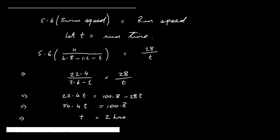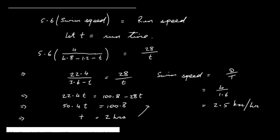The question asks for her average swimming speed. Speed equals distance over time: distance for the swim is 4 km, and the swim time is 4.8 minus 1.2 minus 2, which is 1.6 hours. So the swim speed is 4 divided by 1.6, which equals 2.5 kilometres per hour.